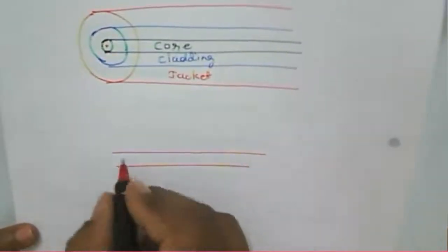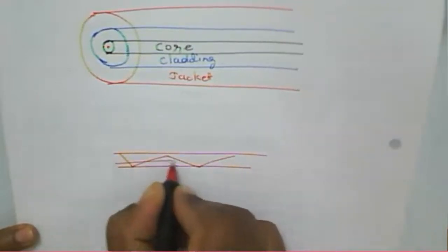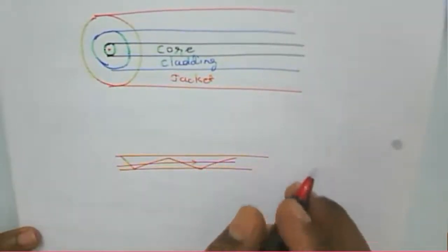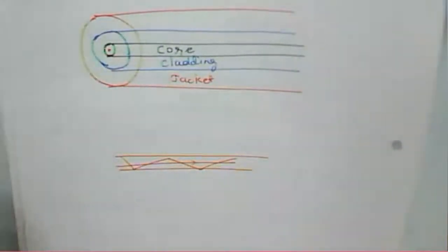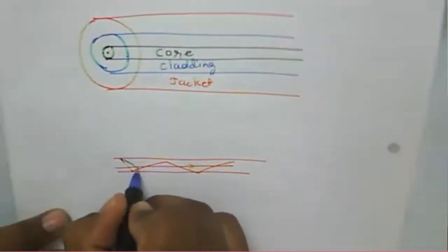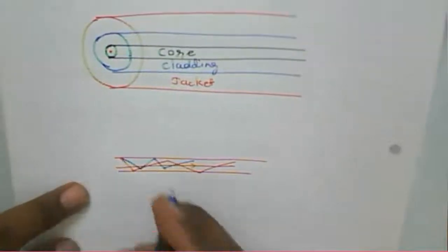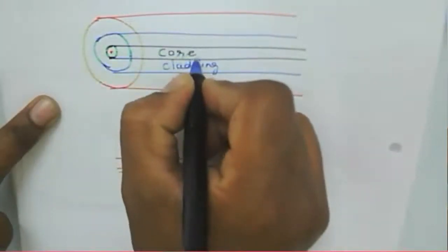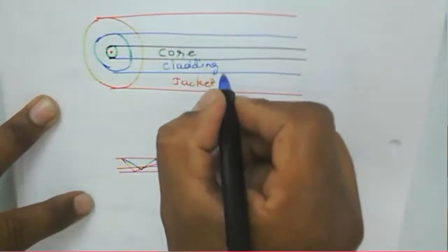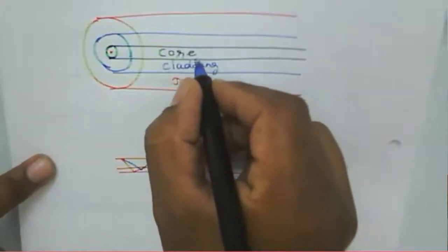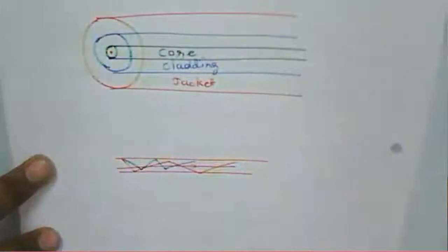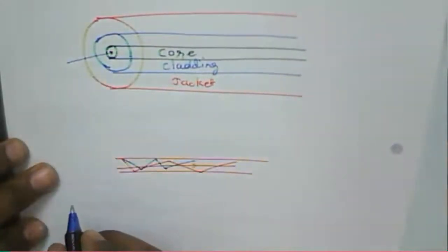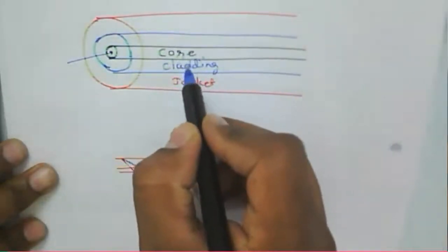If the fiber is a single-mode fiber, light propagates directly. In a multi-mode fiber, there are multiple rays reflecting off the boundaries. The refractive index of the core and cladding have a small difference, and signals reflect from the boundaries because of this. Light propagates through the core, which is made of glass material — a transparent material.